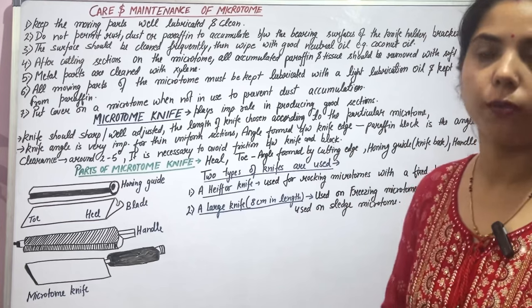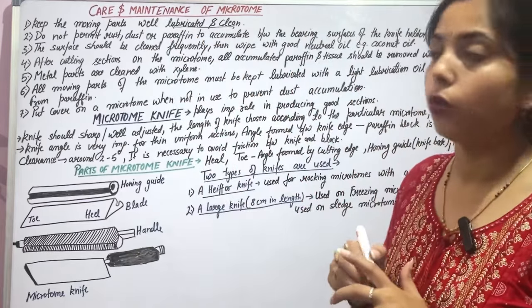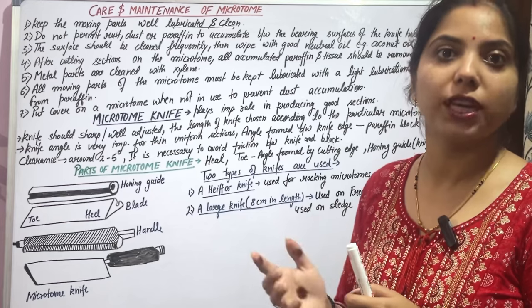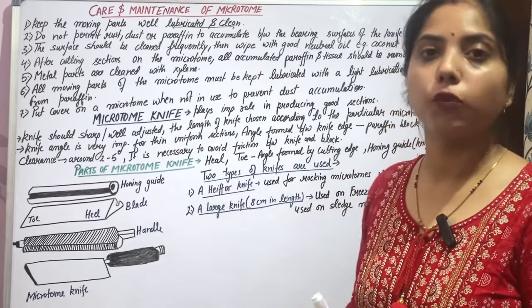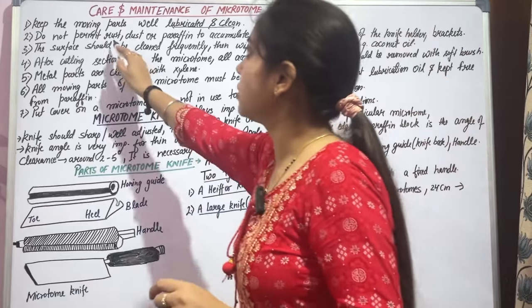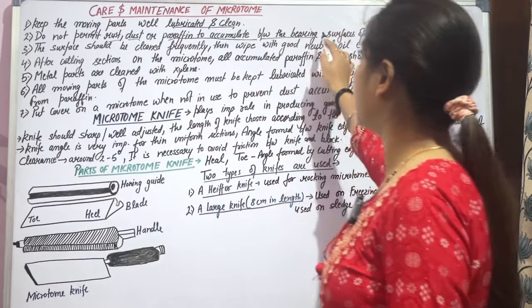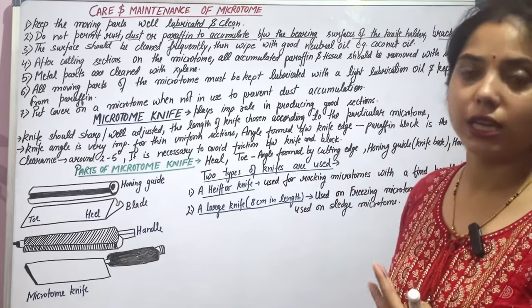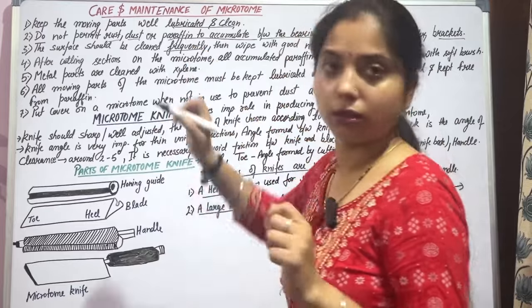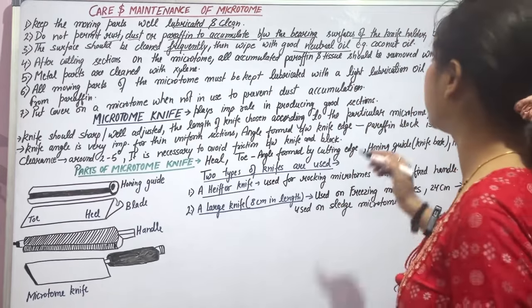Now let us look at the care and maintenance of the microtome. Keep all moving parts well lubricated and clean. Do not permit rust, dust, or paraffin to accumulate between the bearing surfaces of the knife holder and brackets. The surface should be cleaned frequently and wiped with a good neutral oil, such as coconut oil.